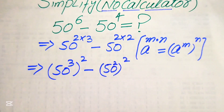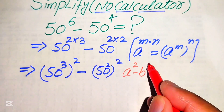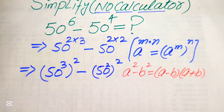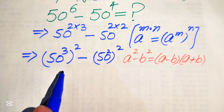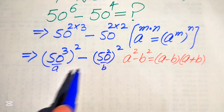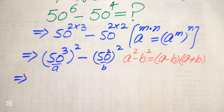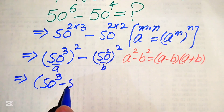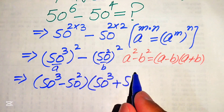After that, we use the algebraic formula: a squared minus b squared equals (a minus b)(a plus b). According to this formula, the base of the first term is our a and the base of the second term is our b. Applying this formula, we write the expression as (50 cubed minus 50 squared)(50 cubed plus 50 squared).